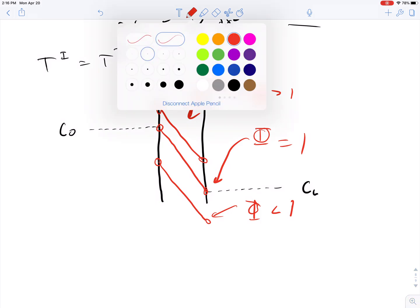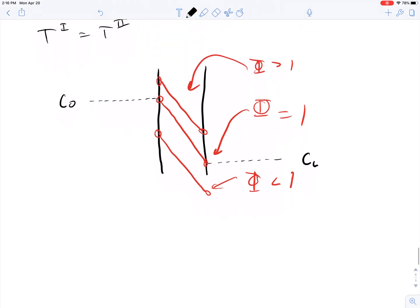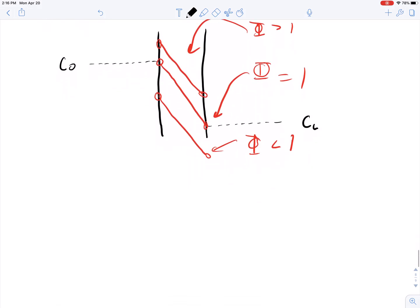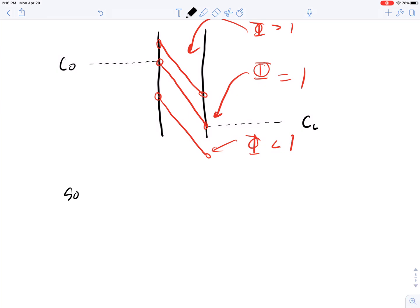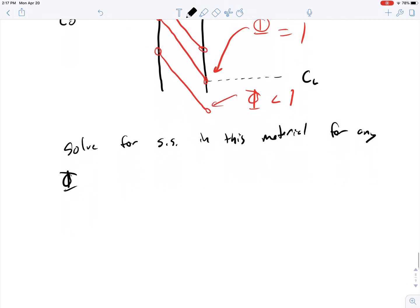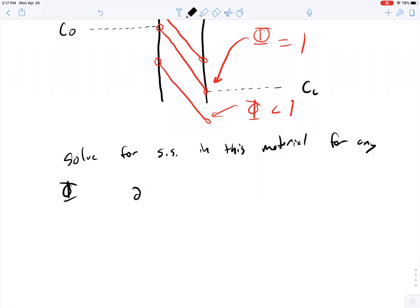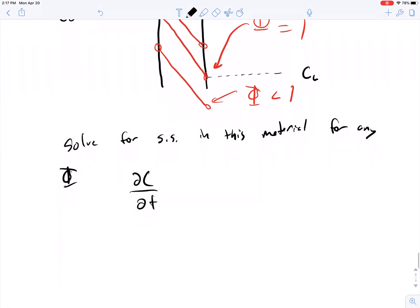So let's solve one problem where we take this into account. This first one is just to solve for the steady state in a material with partition coefficient phi. Steady state in this material for any phi. So I'll start with our equation. We're going to have no reactions in this. We're going to start with our full differential equation, assuming a constant diffusion coefficient, like this.